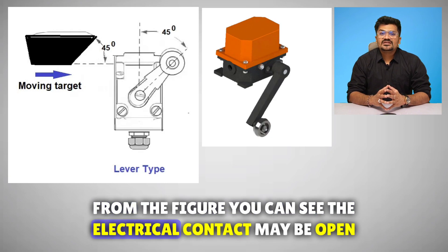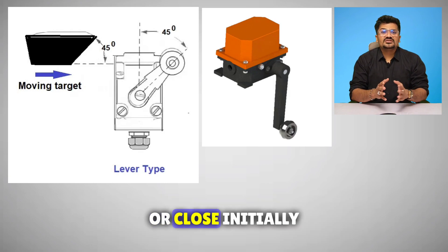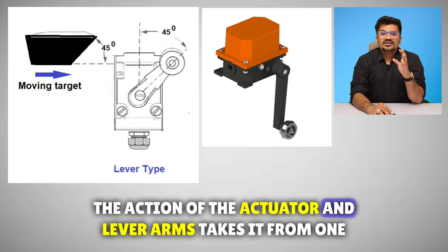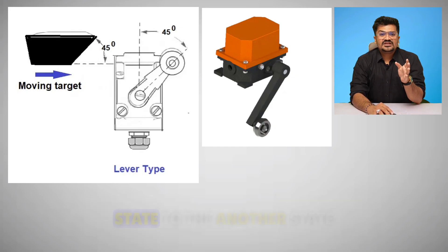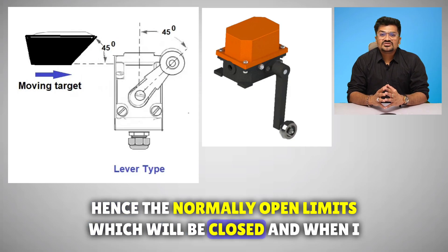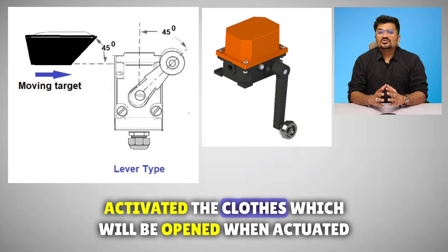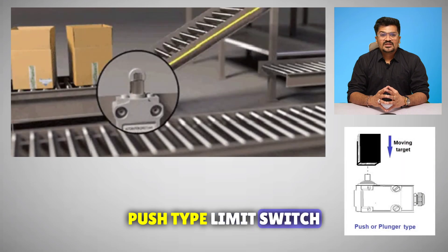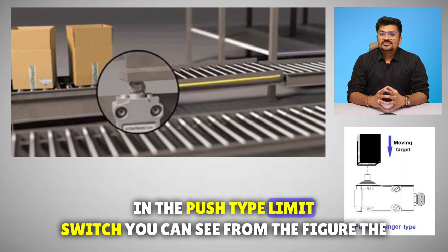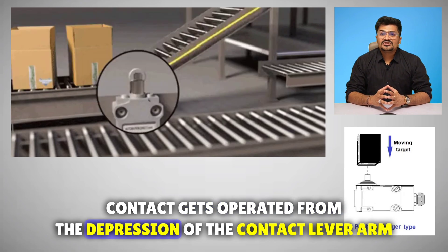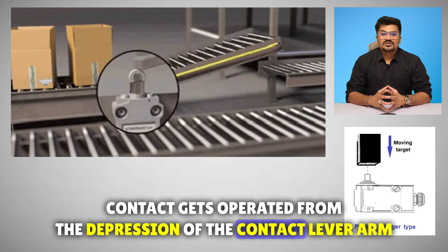From the figure you can see the electrical contact may be open or closed initially. The action of the actuator and lever arm takes it from one state to another state. Hence the normally open limit switch will be closed when activated, and the closed switch will be open when actuated. In the push type limit switch, the contact gets operated from the depression of the contact lever arm.